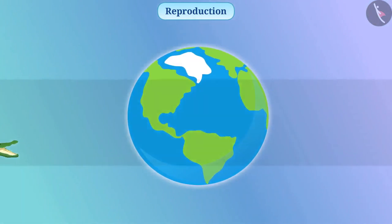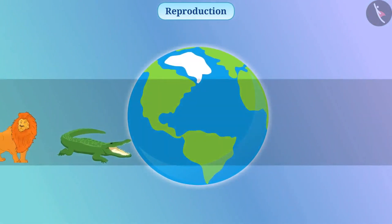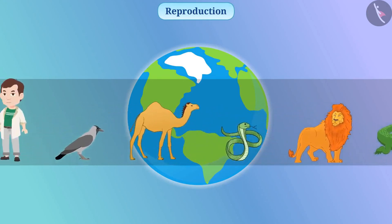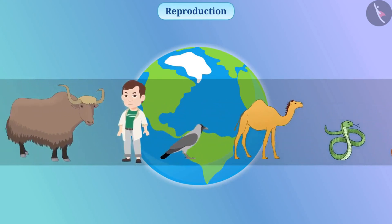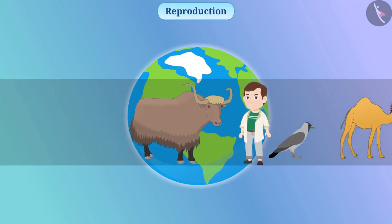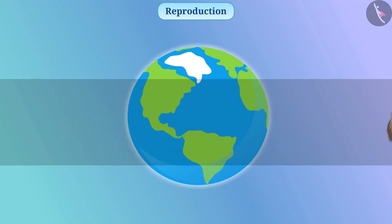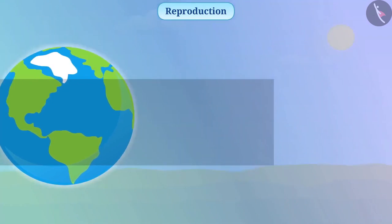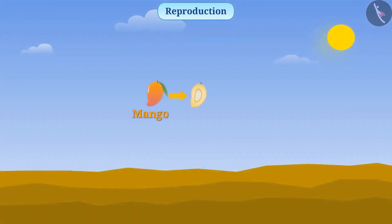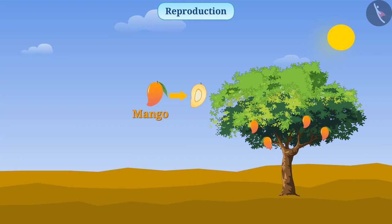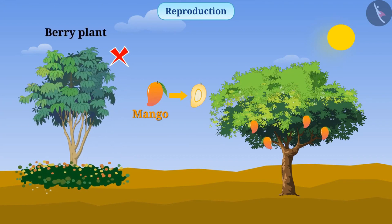Without reproduction, no life is possible on earth. Let's talk about important parameters of reproduction. You must know that a seed of mango produces a mango tree — it does not produce a berry plant.